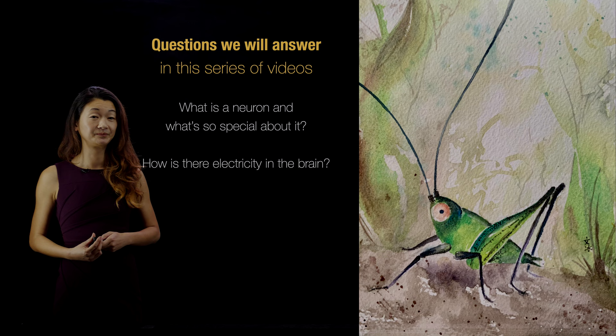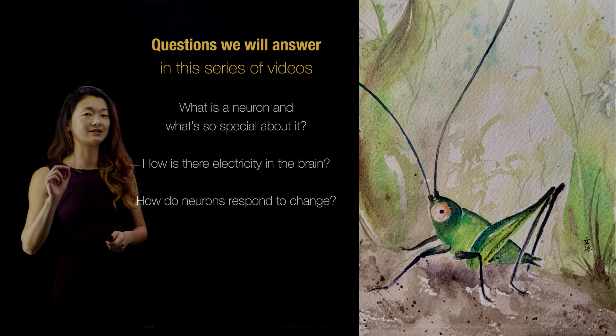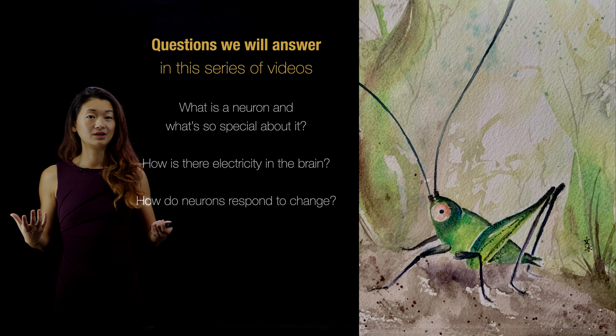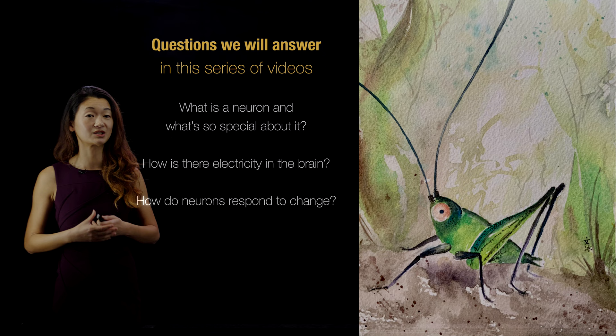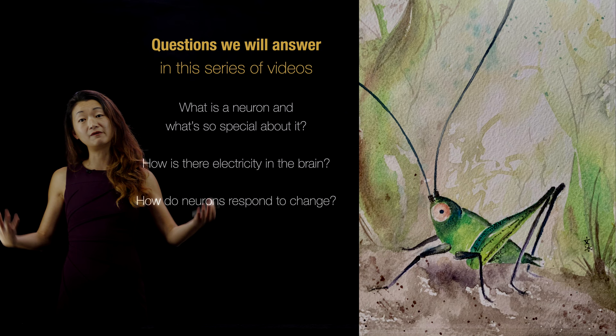After we figure out how there is electricity in the brain, we're going to figure out how it is that this electrical activity changes when something is changing in the environment of the neuron. Figuring out how it is that neurons respond to change is really important because that's actually how it is that we experience the world. We don't experience static things — we experience things that change.